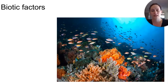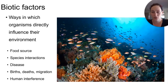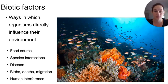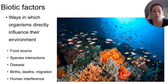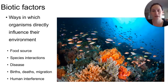Biotic factors are ways in which organisms directly influence their environment. These factors might include an organism's source of food — whether it's a consumer or a producer — and their interactions with other species, such as competition, predation, symbiosis, and parasitism. We also have to think about disease, which is usually considered a biotic factor, whether it's bacterial or viral. Births, deaths, and migration rates are going to affect over- or underpopulation, and therefore competition for resources and reproduction. Human activities are also going to have an impact, and we ourselves are animals, so we consider that a biotic factor.